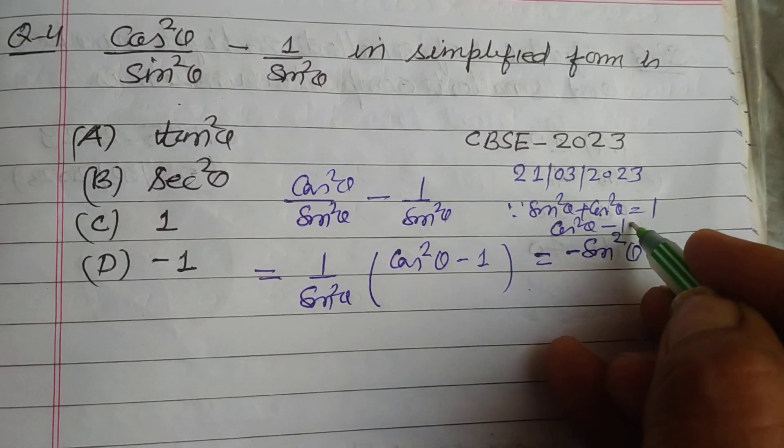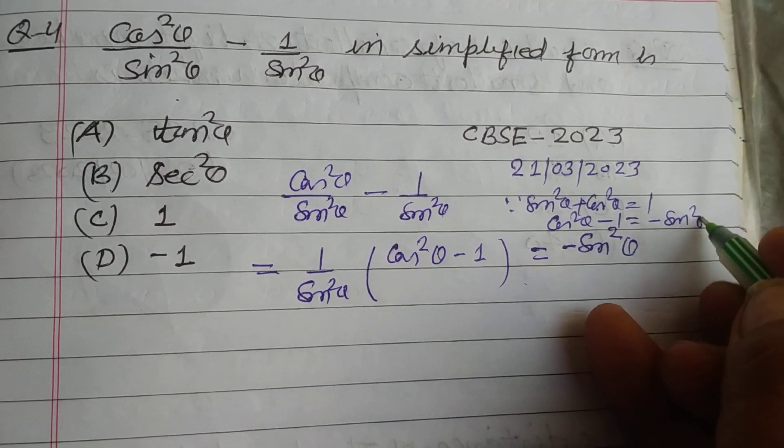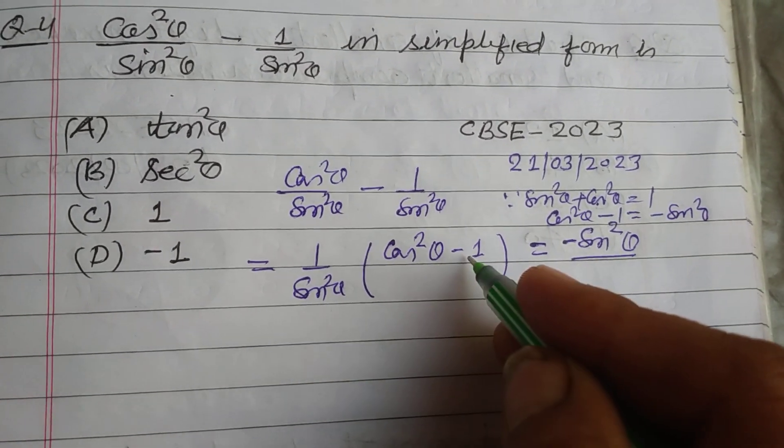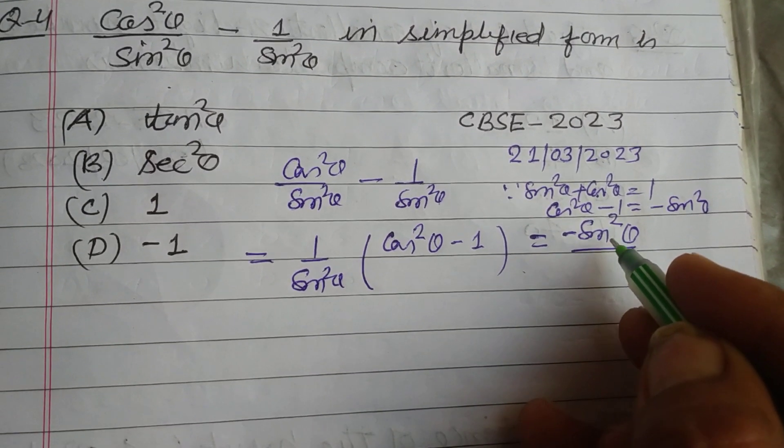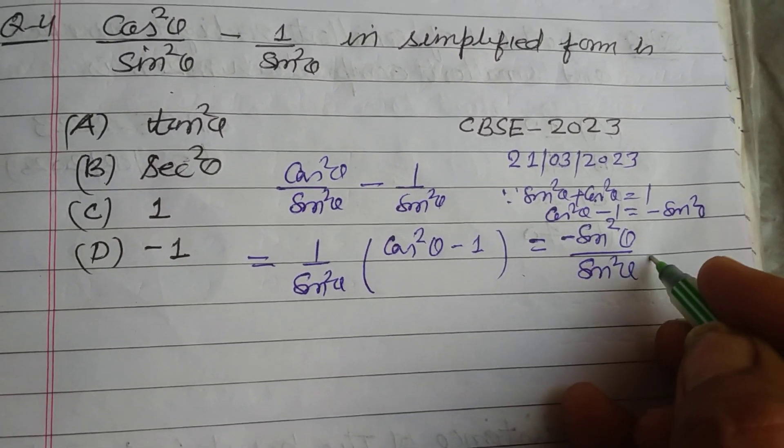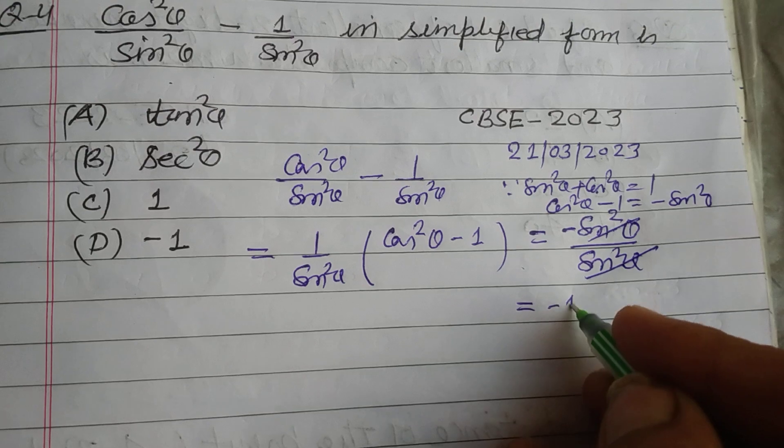this becomes cos square theta minus one equal to minus sine square theta. So we put here cos square theta minus one upon sine square theta equal to minus sine square theta upon sine square theta, and this is divided by minus one.